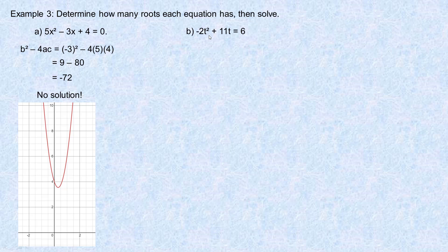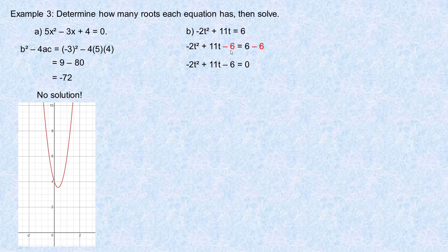For the last example, the equation is close to standard form but not quite — we have a 6 on the right side. It needs to be everything set equal to 0. So we subtract 6 from both sides, moving the 6 to the left. 6 minus 6 is 0 on the right, so having a positive 6 on the right is the same as having a subtract 6 on the other side. This is the equation we're asked to solve.